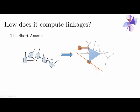So how does it compute linkages? If you have a given motion specified as a set of poses, the algorithm looks for points on the moving object which trace either a circular path, a fixed straight line, or a line tangent to a circular path. If it finds those constraints, it can assemble a four-bar linkage that goes through the specified positions exactly or approximately.